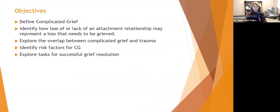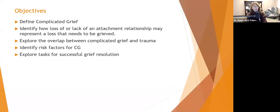We're going to define complicated grief as opposed to regular grief, and identify how loss of or lack of an attachment relationship may represent a loss that needs to be grieved — how kids feel, how adults feel if they grew up and never had that primary attachment relationship. We'll explore the overlap between complicated grief and trauma, identify risk factors for complicated grief, and explore tasks for successful grief resolution.